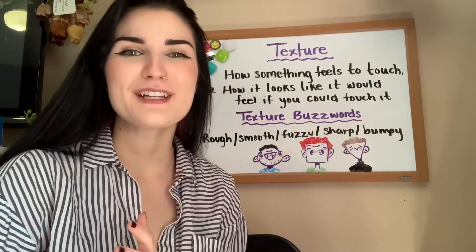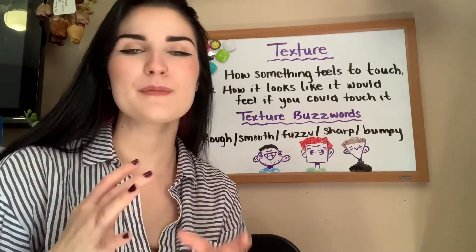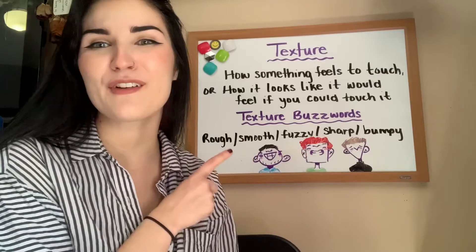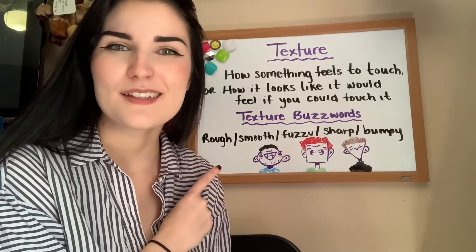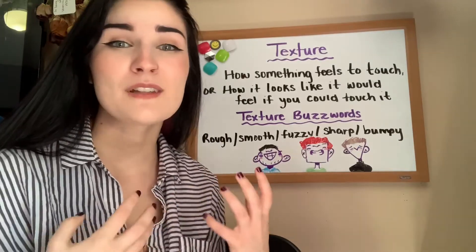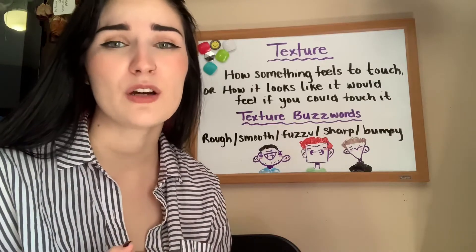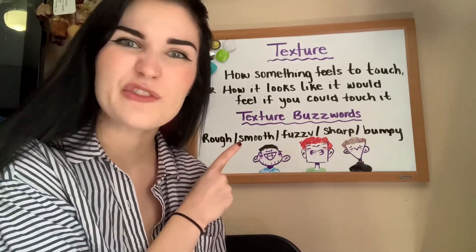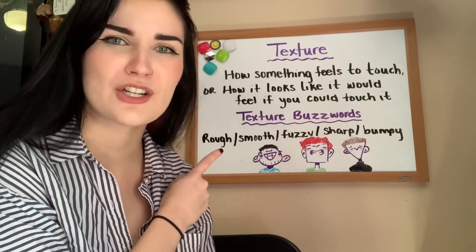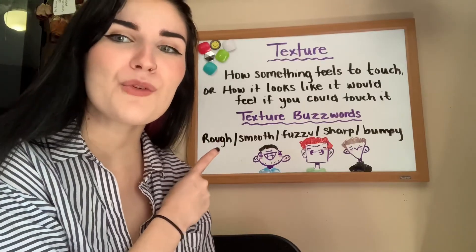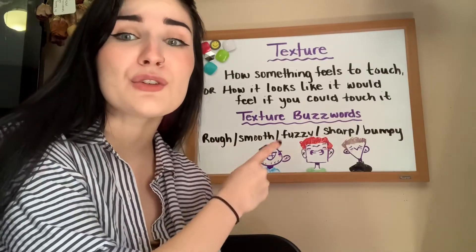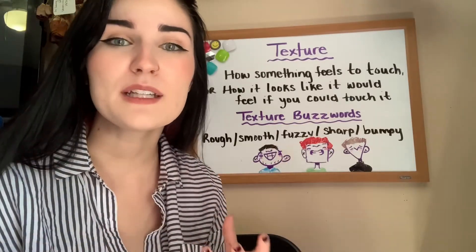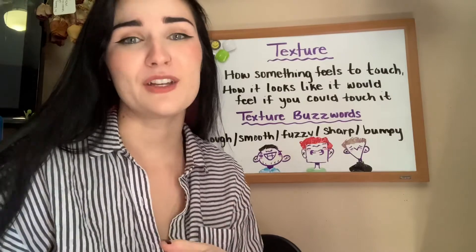Before we jump into it, it's important to know some vocabulary words when we're talking about texture — I have texture buzzwords written up here. These are words we use a lot when describing anything we're trying to draw. If we're drawing a tree, for example, I probably wouldn't say it's a smooth texture — that's a pretty rough texture. What we use to describe what we're drawing is going to be really important to how we choose to render it.